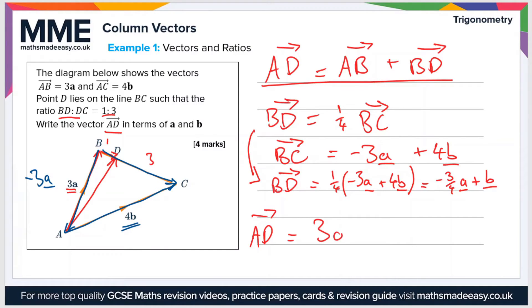And now we have a value for AB which is given in the question, that's 3a, so AB equals 3a. Plus BD, now we've just got an expression for BD, so BD is minus 3 quarters of a plus b. So if we add these two together then we get that AD is equal to 2 and a quarter a plus b.